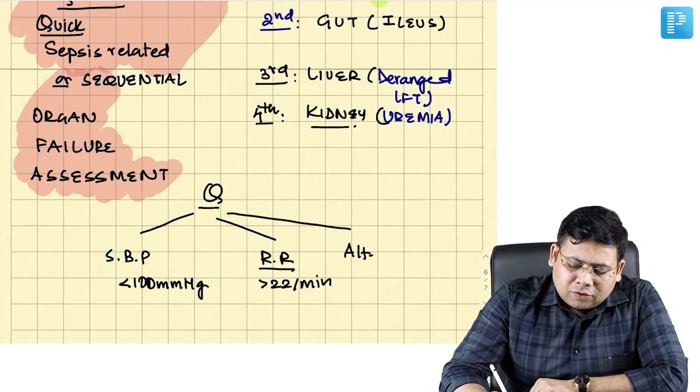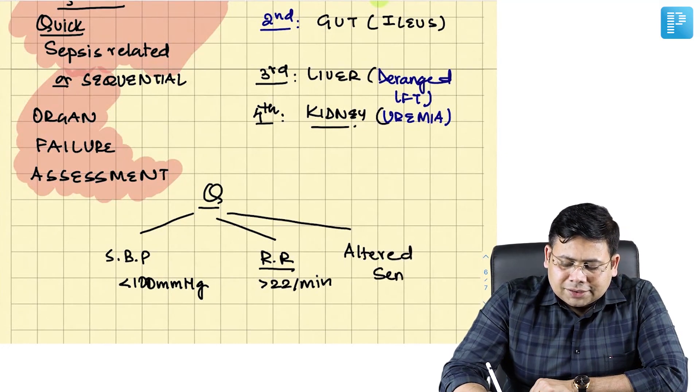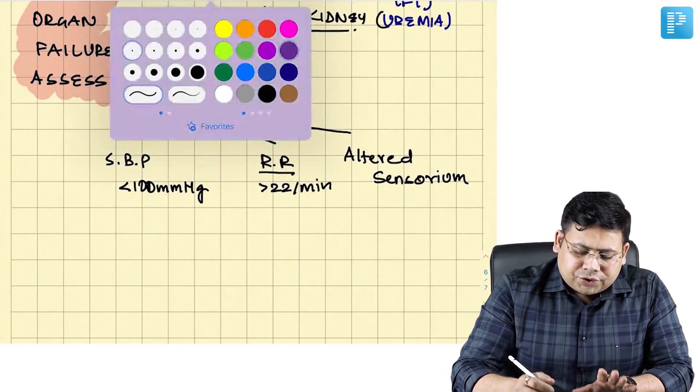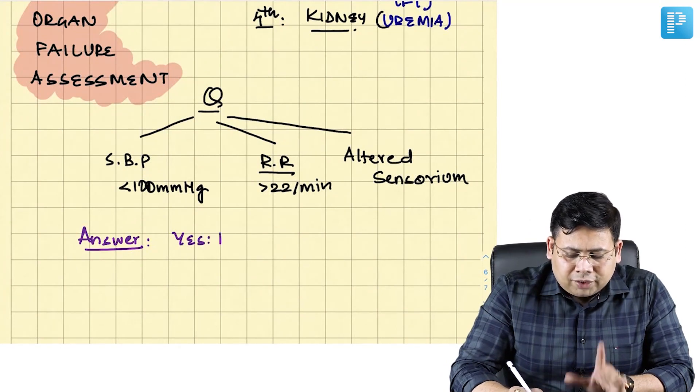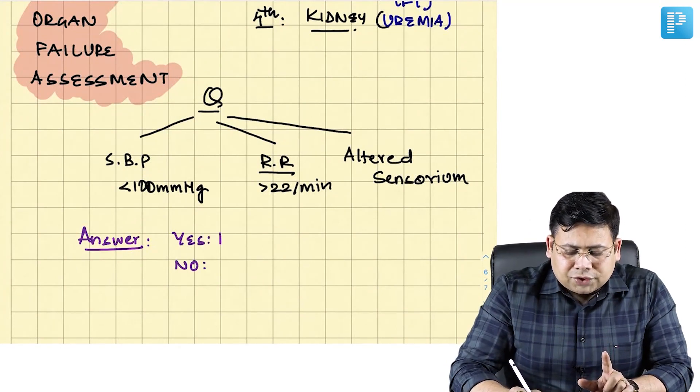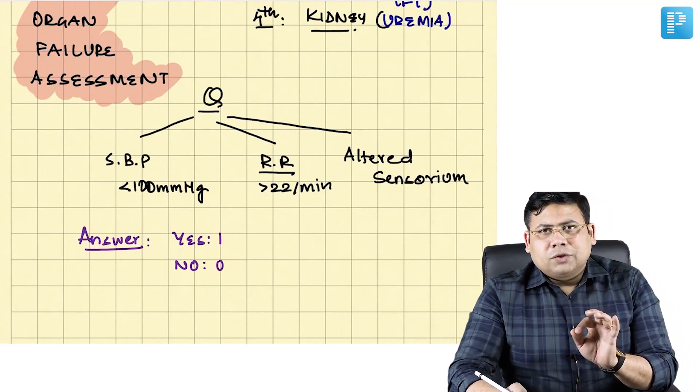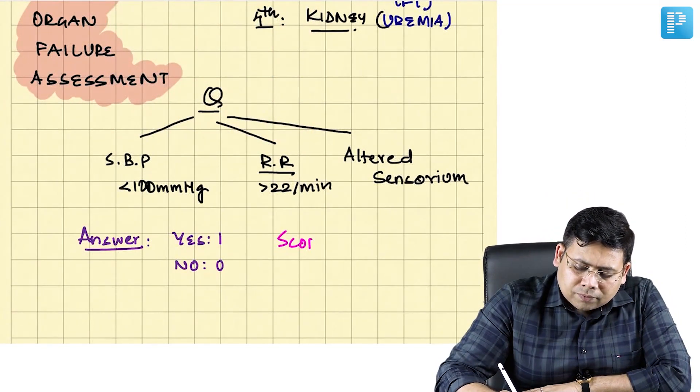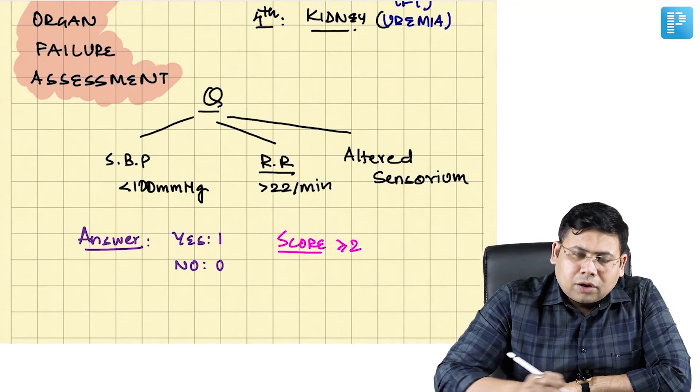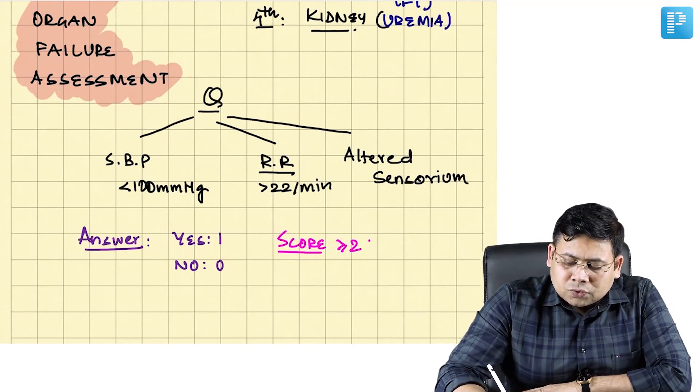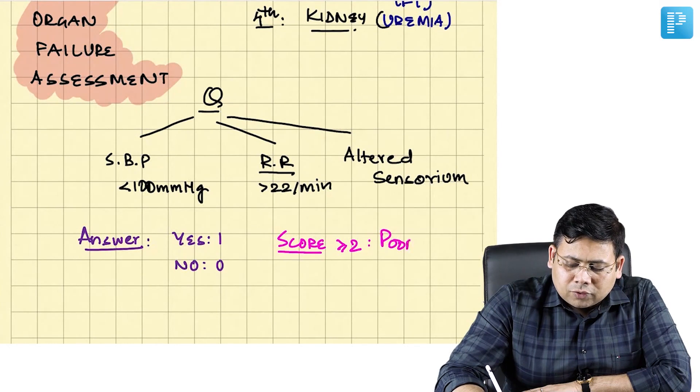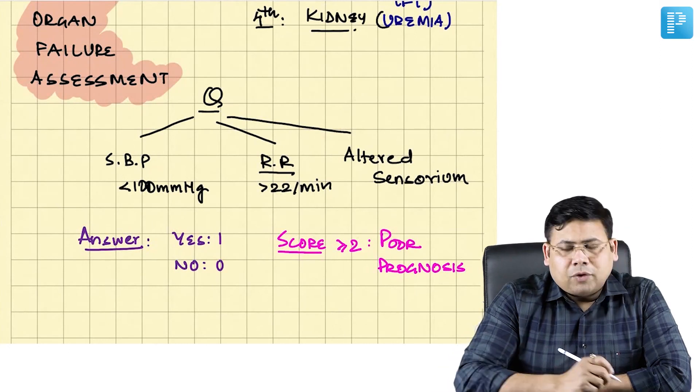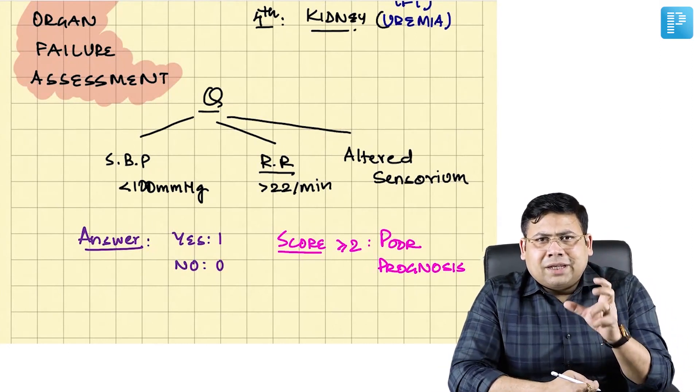Third is the patient's mental condition altered, so you can see altered sensorium. Students, you have to remember, if the answer to your question is yes, then you give a score of one. If the answer to your question is no, then you give a score of zero. Always remember, a score of two or more is associated with poor prognosis.